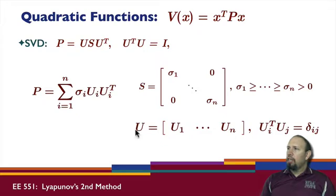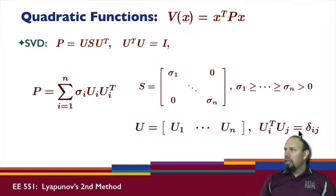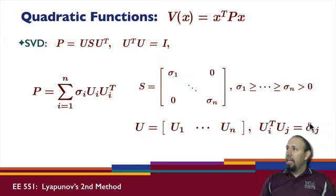The columns of the orthogonal matrix are orthogonal: the inner product of u_i and u_j equals 0 if i ≠ j, and equals 1 if i = j. This is expressed using the Kronecker delta δ_ij — equal to 1 when i equals j and 0 otherwise.